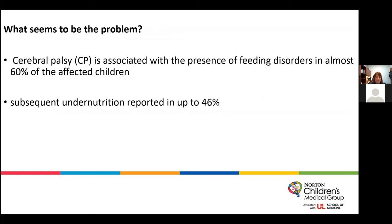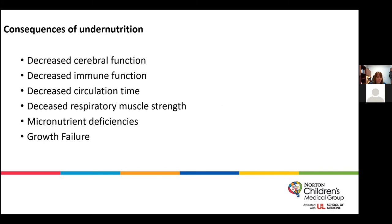CP is associated with the presence of feeding disorders in 60 percent of the affected children, and subsequent undernutrition is reported in 46 percent. Consequences of this undernutrition include decreased cerebral function, decreased immune function, decreased circulation time — which is important if our patient has a pressure sore that needs healing — decreased respiratory muscle strength, micronutrient deficiencies, and growth failure.